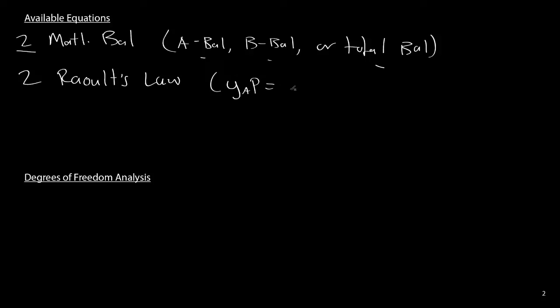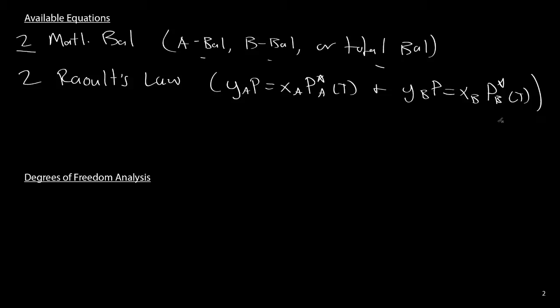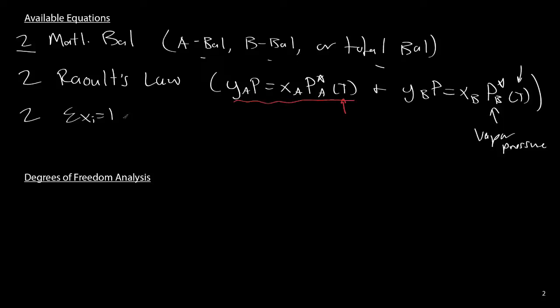The general form of Raoult's law for species A is: ya·P = xa·Pa*(T), and the same applies for species B. Recall that Pa*(T) is the vapor pressure, written with a T to remind us it is a strong function of temperature, even though temperature does not appear explicitly in the expression. The final set of equations are two consistency relationships: the summation of xi equals one, and the summation of yi equals one. That gives us a total of six equations.